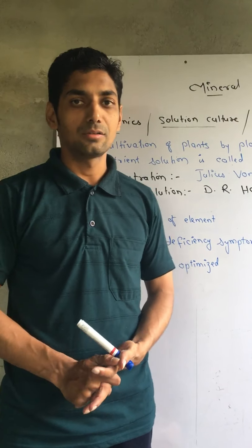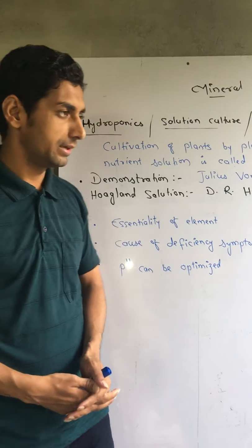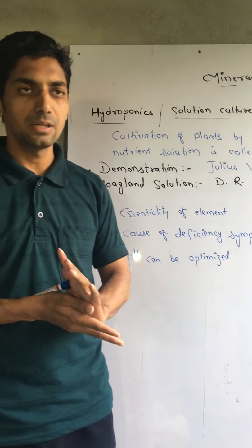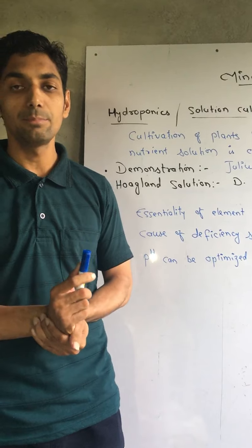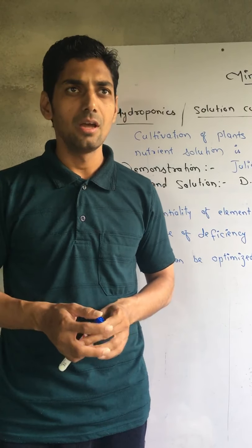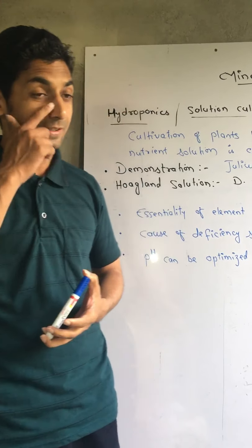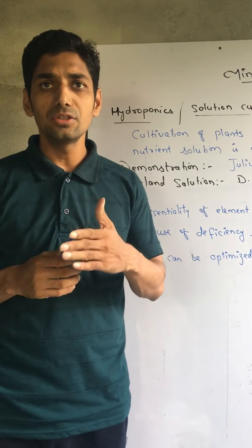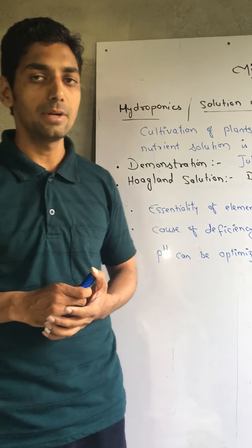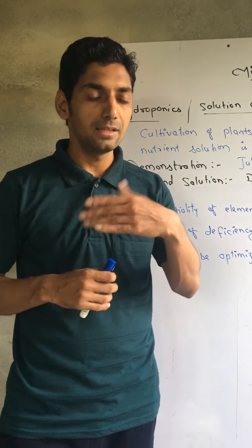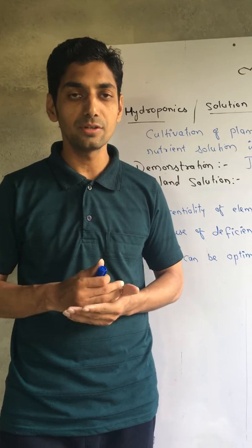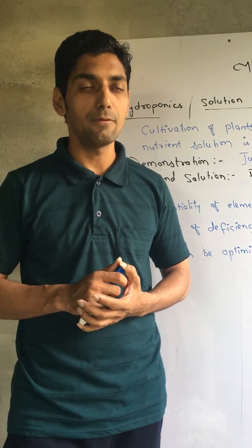Today we are going to continue with the unit Mineral Nutrition. In the previous class, we studied this unit, and the segment was Essential Elements. Essential Elements can be divided into two categories — Micro Elements and Macro Elements — based on their quantity. And then four different types can divide the Essential Nutrients based on the function performed.